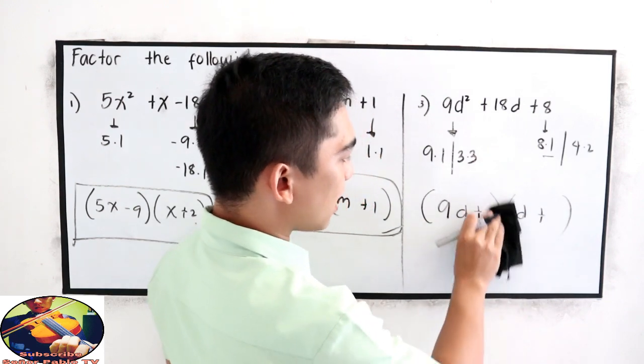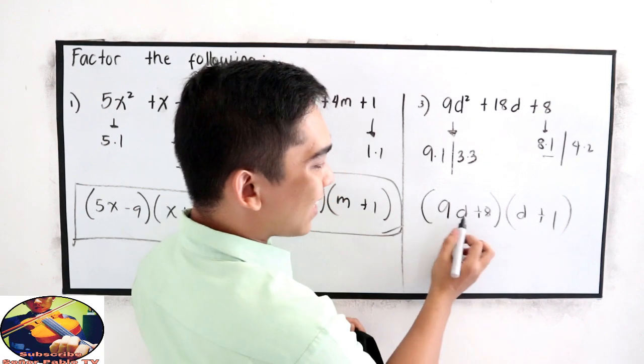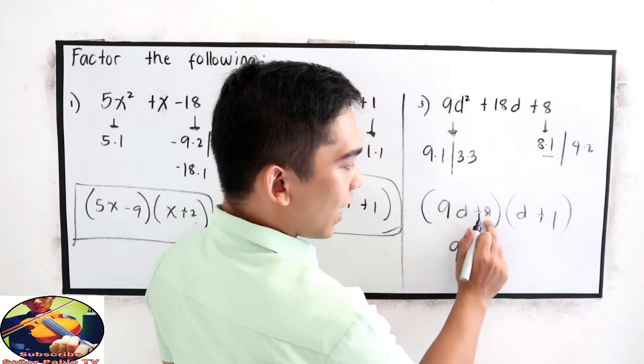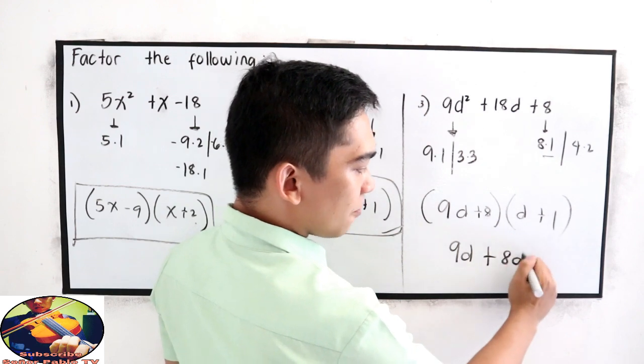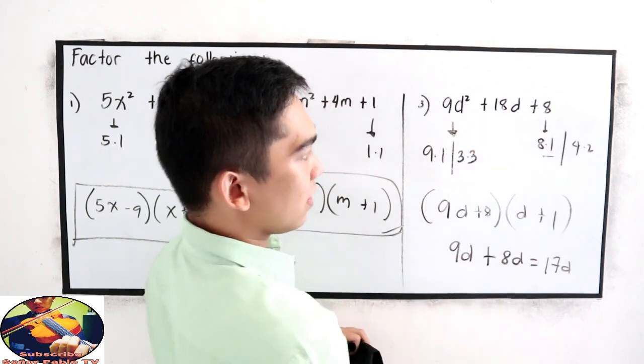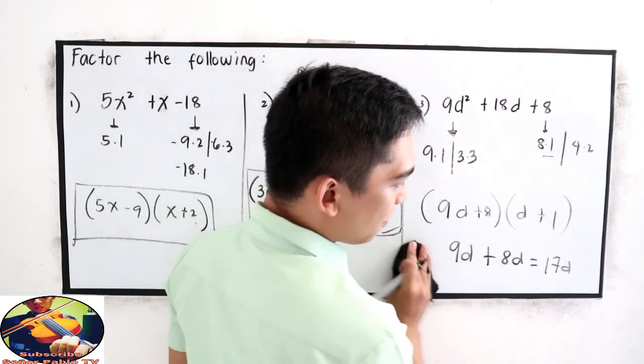So, let's try positive 8 and positive 1, 9d times 1, that is 9d, plus 8 times d, 8d, 17d. Not yet. Let's try another factors.